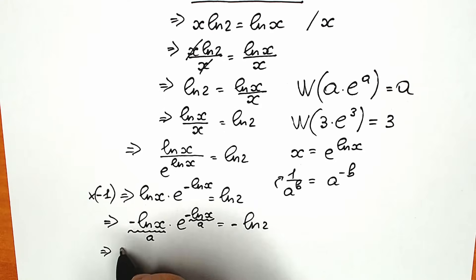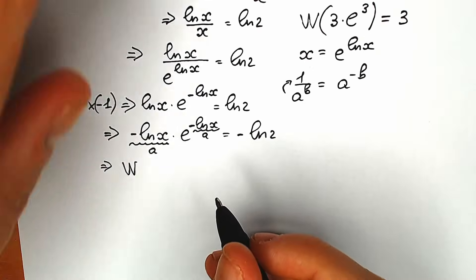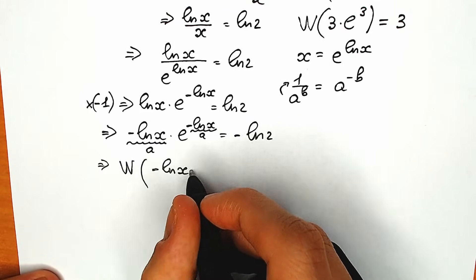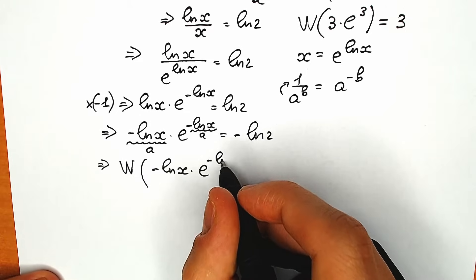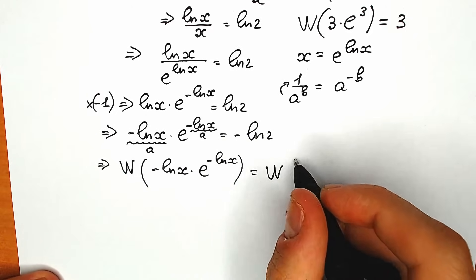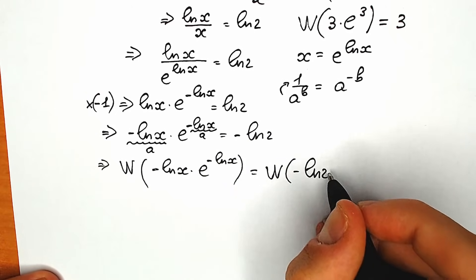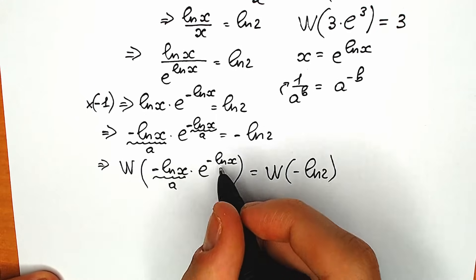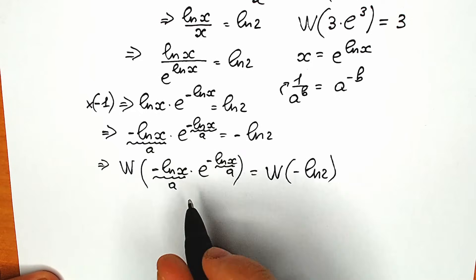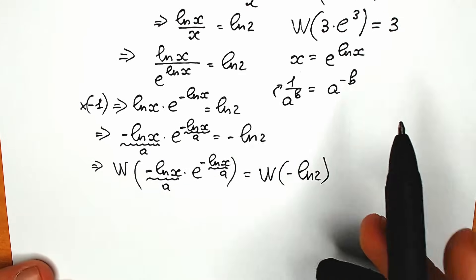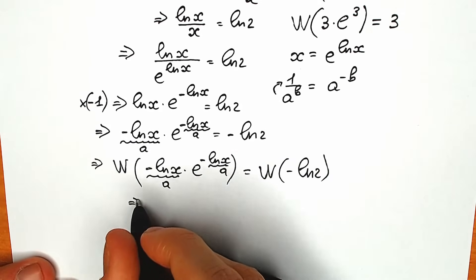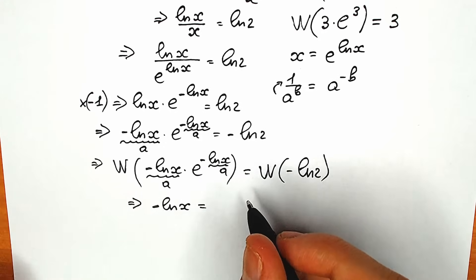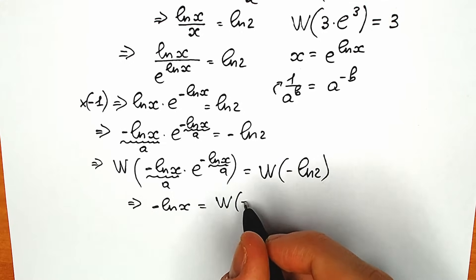Let's apply the Lambert W function to both sides. We have W of minus natural log x times e to the power minus natural log x equal to W of minus natural log 2. Since minus natural log x is our a appearing in both positions, applying W gives us only a. So we get: minus natural log x equal to W of minus natural log 2.